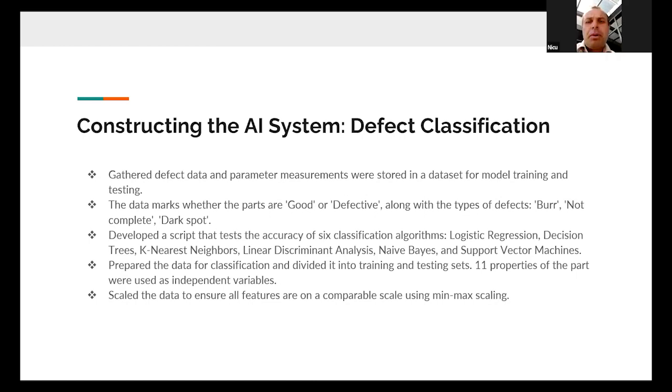We were using six classification algorithms: logistic regression, decision tree, K-nearest neighbors, linear discriminant analysis, naive Bayes, and support vector machines. All the data was labeled as good or defective, and with the type of defect: burr, not complete, dark spot.